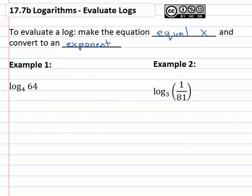So in this first example, we want to figure out what log base four of sixty four is. We'll make that equal to x. When we convert this to an exponent, four is the base, x is the exponent equals sixty four.